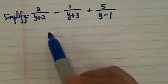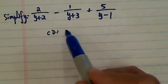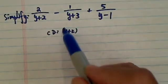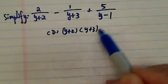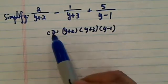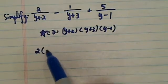To simplify this one, you need to have the common denominator, which is y plus 2 times y plus 3 times y minus 1. Keep this in mind. The first term is missing this one and this one.